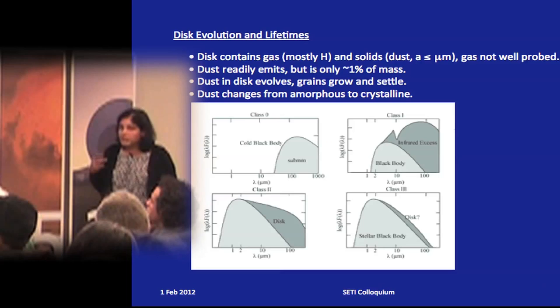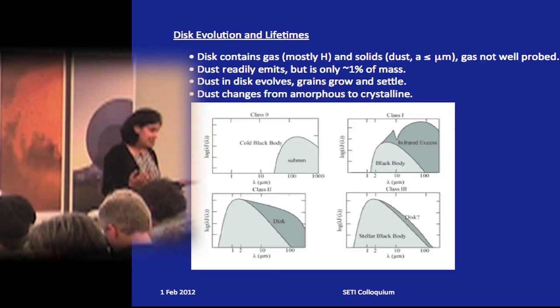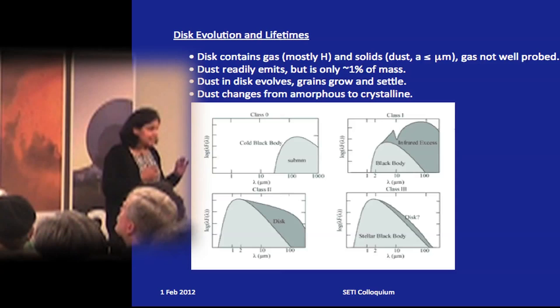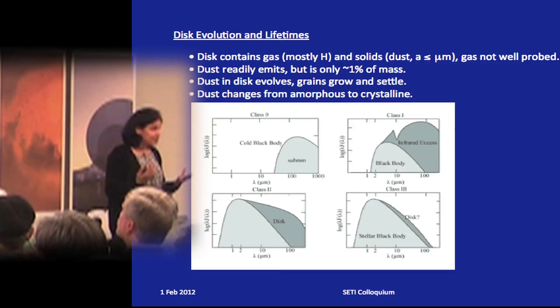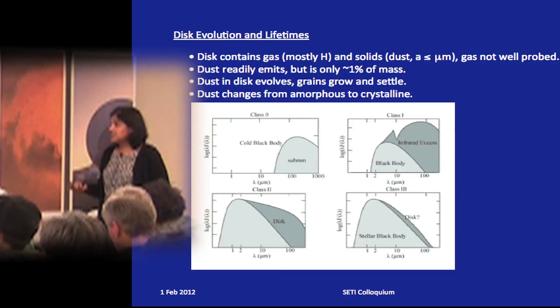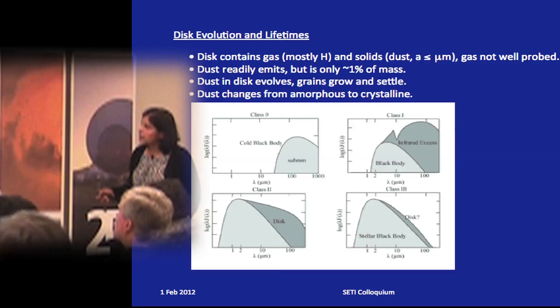The disc was initially formed from molecular cloud material — mostly molecular hydrogen, nearly 99% by mass, with small micron-sized solid particles of dust suspended in it. Even though dust is a small fraction by mass, it's very useful because it absorbs stellar light and re-radiates in the infrared, making it easily detectable. Most of what we know about disc evolution is gleaned from dust studies.